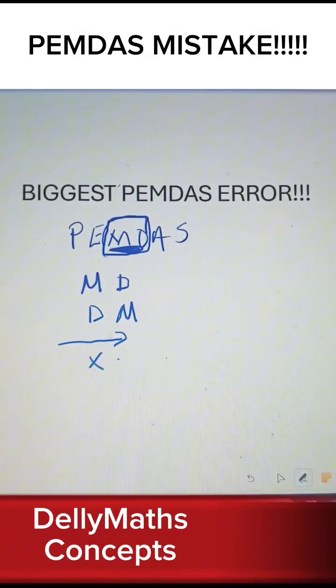If multiplication comes before division, then you do the multiplication first. But if division comes before multiplication, you must do the division first. That is one of the biggest errors I've noticed.